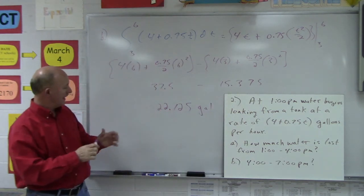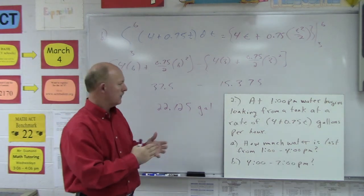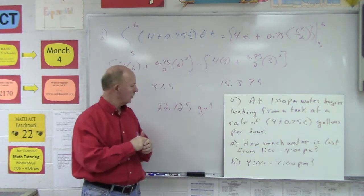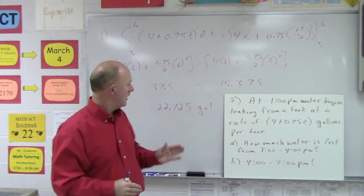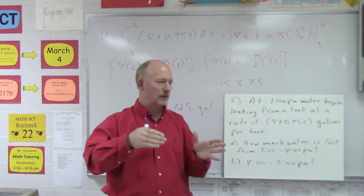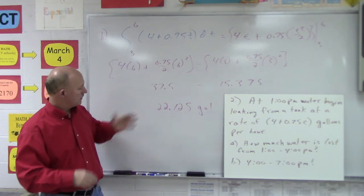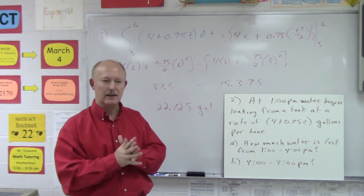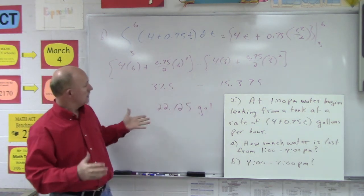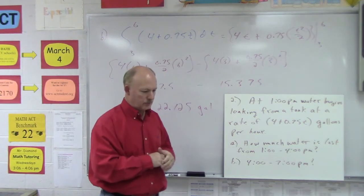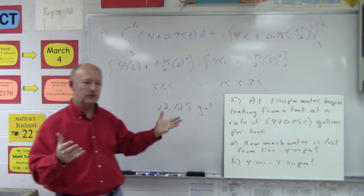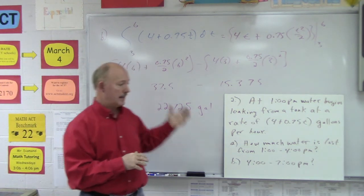Over the second three-hour period, the amount of water leaked has actually increased — the leak is getting worse as time goes along. During the first three hours we lost about 15.375 gallons, and during the second three-hour period we've leaked over 22 gallons. So the rate of water leaking from the tank has increased — 22.125 gallons for the second period. Hopefully you know a little bit more about the net change theorem now, and how to calculate net change. Make sure you get the correct lower and upper bounds, then evaluate your definite integral.